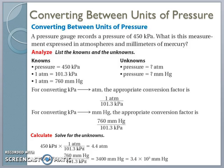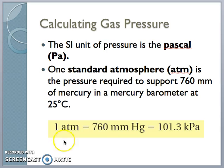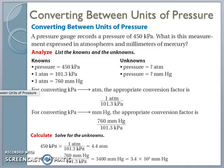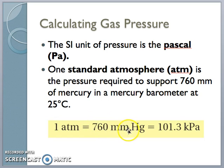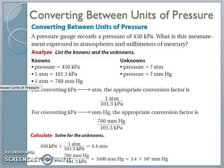Here's an example of converting between units of pressure. It's the same thing as conversions we've done—think about inches to feet, hours to seconds, hours to minutes, things like that. It's the exact same thing. Let's do this example: A pressure gauge records a pressure of 450 kilopascals. What is this measurement expressed in atmospheres and millimeters of mercury? We know that 1 ATM is equal to 101.3 kilopascals, so we can do this conversion. We start with our given: 450 kilopascals.